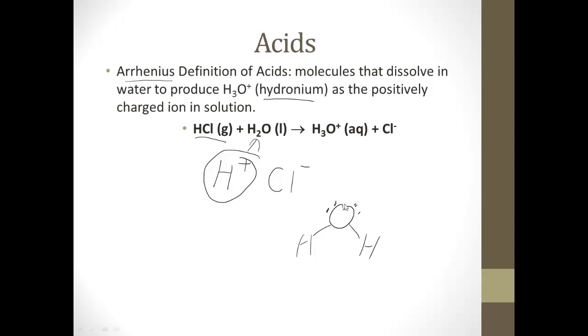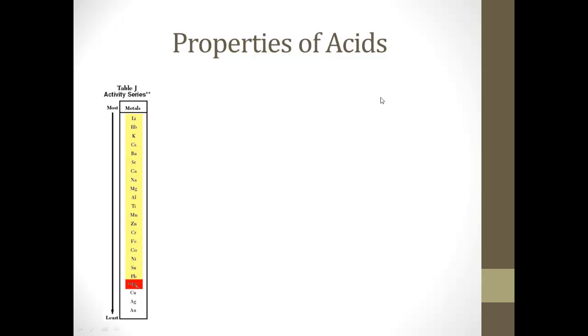This H plus, which is positively charged, sees these negatively charged electrons and joins to form an H3O plus ion, which is aqueous, dissolved in the water, and chloride ions. So in general, that's the definition of an acid. Let's look at some properties of acids.